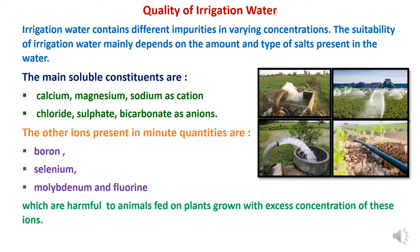There are some other minor contents like boron, selenium, molybdenum and fluorine. Even though these contents are present in a small quantity, they are harmful to animals if they are fed with plants grown in high concentrations of these contents — boron, selenium, molybdenum and fluorine.